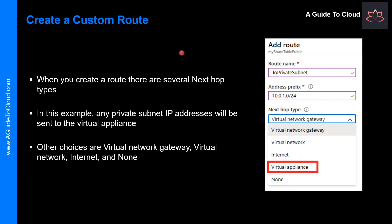So how do you create a custom route? In this example, a new route is named 'to private subnet'. The private subnet is at 10.0.1.0 and the route uses a virtual appliance. Notice the other choices for the next hop type: virtual network gateway, virtual network, internet, and none. The virtual appliance is located at 10.0.2.4. In summary, this route applies to any address prefixes in 10.0.1.0/24, and traffic headed to this address will be sent to the virtual appliance at 10.0.2.4.